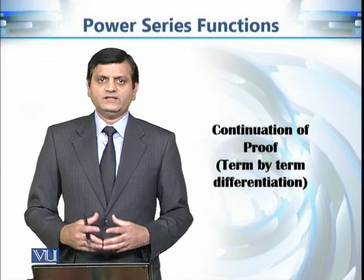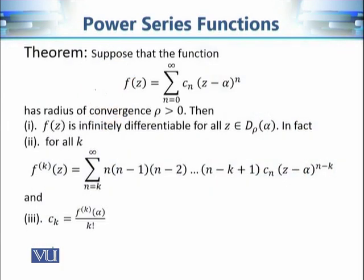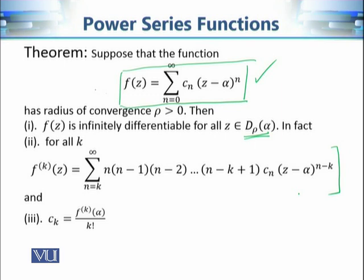This is not an independent module; it is a continuation of our proof on term-by-term differentiation for power series functions. The theorem states that for every z within the disk of convergence, the power series function is infinitely differentiable. In the second part we can calculate the k-th derivative, and in the third part we can calculate the values of the coefficients c_n.